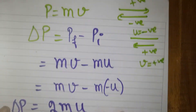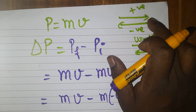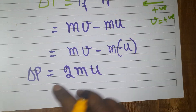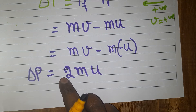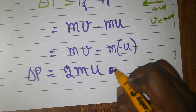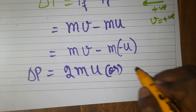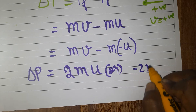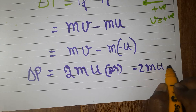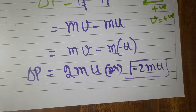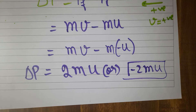In case the going velocity is taken as positive, then coming back is negative, and the answer would be minus 2MU. That is also a correct answer. So the change in momentum can be −2MU as well. Now Case 1 is completed.